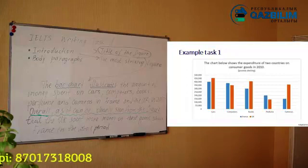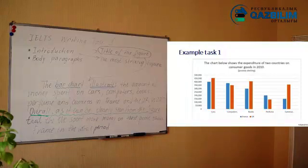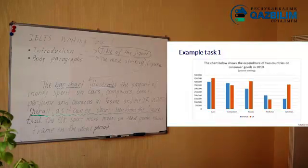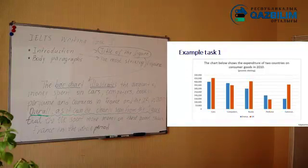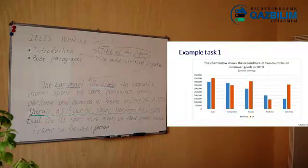If you want to know other academic words that can replace 'show,' you should contact us. Instead of writing 'consumer goods,' I wrote directly: cars, computers, books, perfume, and cameras. Since there were only five goods I could list them, but if you have more than five elements you can just write 'consumer goods' or paraphrase the term. The year 2010 I left as it is. This is the first sentence of the introduction — a simple paraphrase of the title.